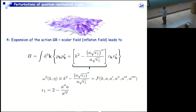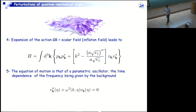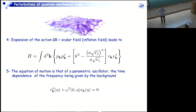If you vary the Hamiltonian and calculate the equations of motion, the equation for the Mukhanov-Sasaki variable is that of a parametric oscillator — not a harmonic oscillator. A harmonic oscillator would be a pendulum; a parametric oscillator is a pendulum whose length can change with time. The way the length changes is completely controlled by the dynamics of the background.